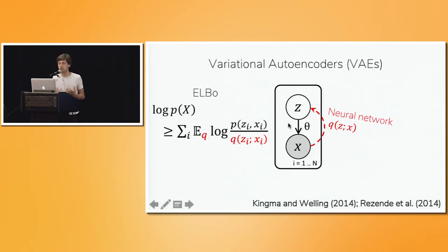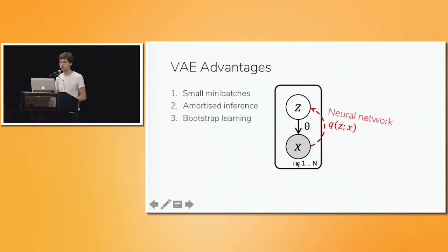So variational autoencoders are an extension of this idea, where instead of defining each variational posterior separately, we parameterize each of them as a function of the data that they're supposed to explain. So we have a single neural network, which takes any x, and returns a variational distribution over the values of z, which could explain that x. And this means that to train our model, we just sample a mini batch of x's, and run those x's through the encoder network to find the corresponding variational posteriors.